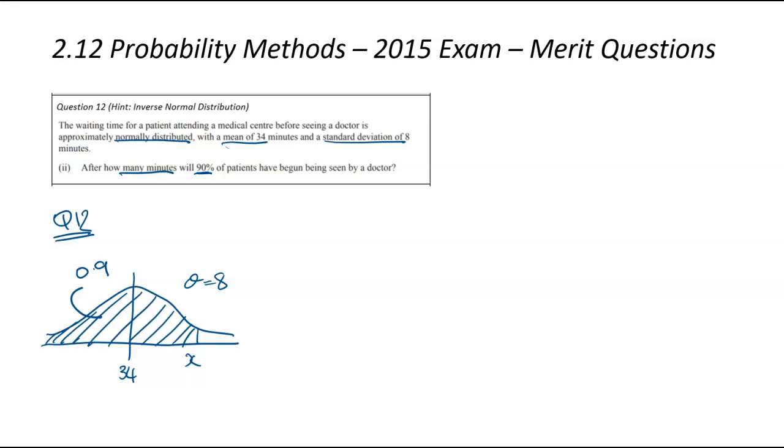We're interested in when will 90% of the patients be seen. So this here would represent the top 10%, the 10% of people who had the longest wait to see a doctor. Which means everything below that would be the 90% of patients. So the probability of this area would be 0.9. We're using the inverse normal distribution function. You can see we're going down the left, which means it will be a left tail. The area will be 0.9, the standard deviation of 8, and the mean of 34. When you put that all into your calculator, you're going to get 44.252 minutes.